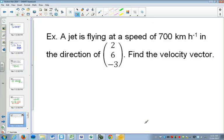So we've got our direction. And my question is, why isn't that the velocity vector? If it was the velocity vector, what is the speed of this one?